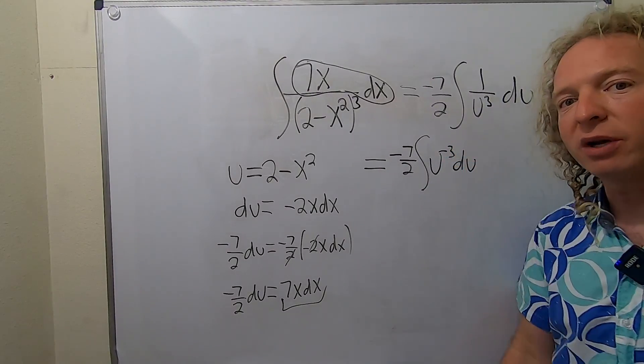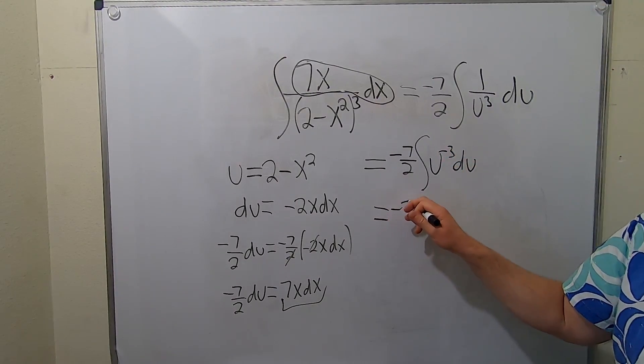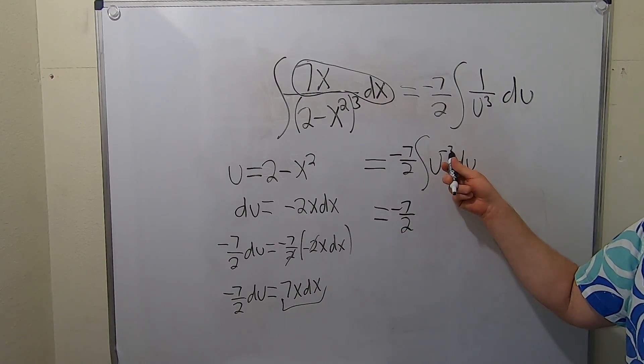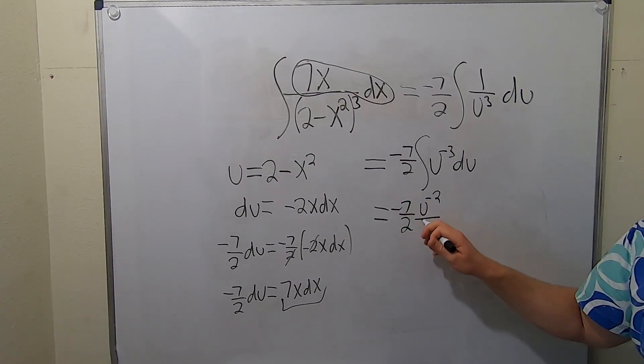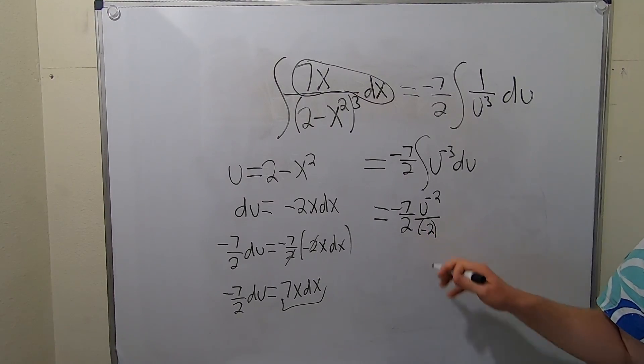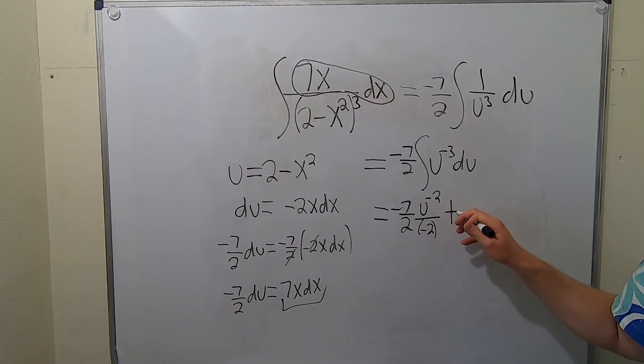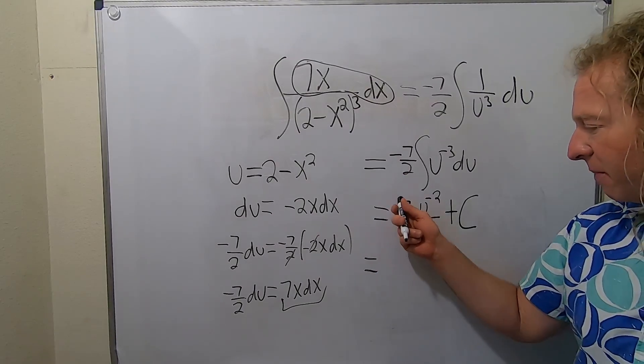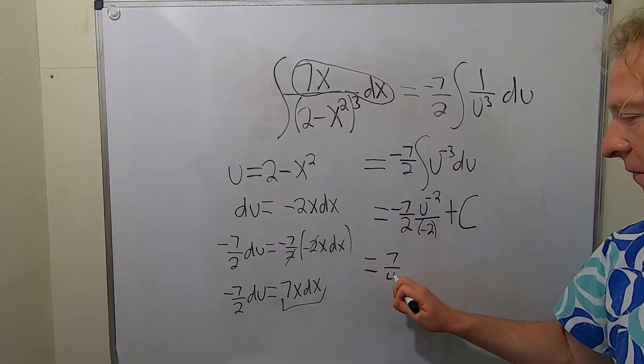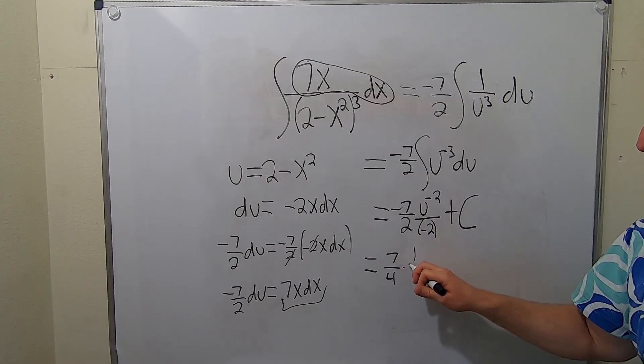Now you just add 1 and use the power rule to integrate. Adding 1, you get u to the negative 2, and then you divide by that, so negative 2. Don't forget the plus capital C. This is going to be positive 7 fourths. Let's bring this guy down again, so we get 1 over u squared plus capital C.